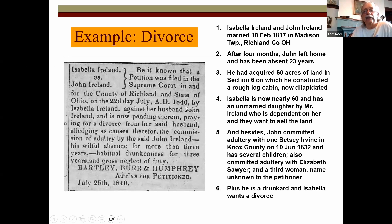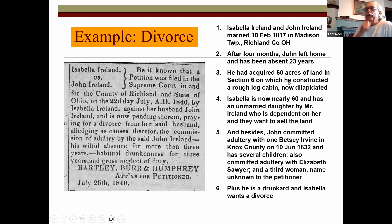Here's Isabella Ireland versus John Ireland, 1840, Richland County. The parties were married in 1817 in Madison Township. After four months, John left home and has been absent for 23 years. Why care now? Because John had 60 acres of land and had constructed a rough log cabin now dilapidated. Isabella is now 60 with an unmarried dependent daughter, and they want to sell the land — but John still legally owns it. John had committed adultery with Betsy Irvine in Knox County and had children by her, committed adultery with Elizabeth Sawyer, admitted adultery with a third unknown woman, and is also a drunkard. Isabella just wants a divorce.